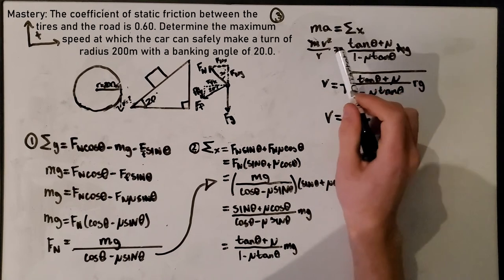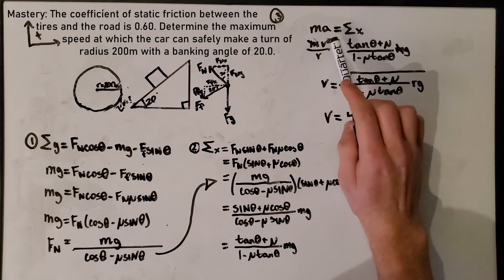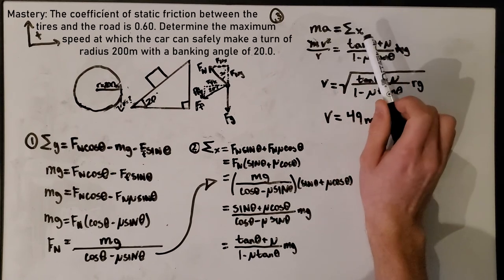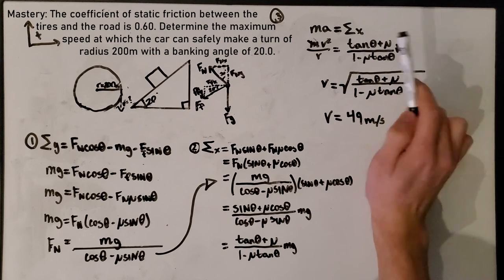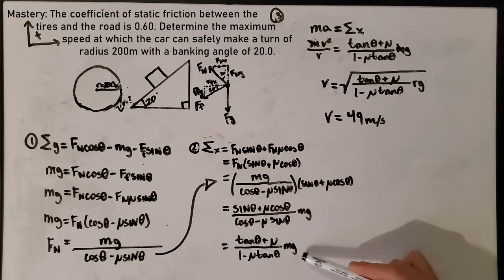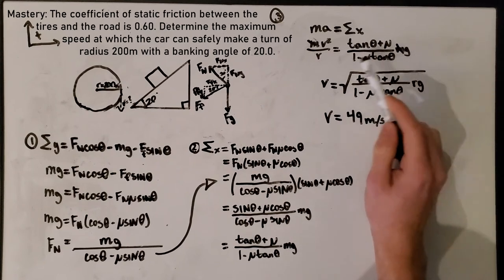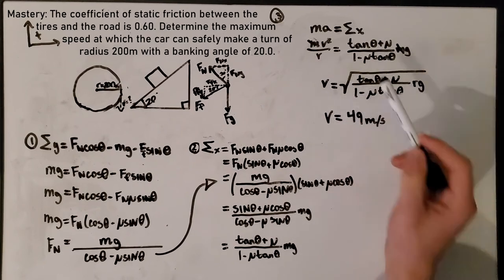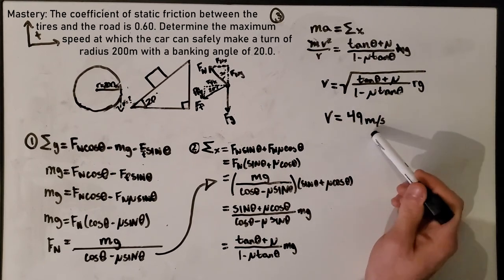Our final step is we use ma, which is our centripetal force, equals our f net in the x direction. So mv squared over r equals this formula that we had down here for the x. Then we cancel all the masses and isolate for v, and we get our number of 49 meters per second.